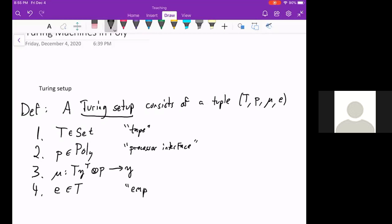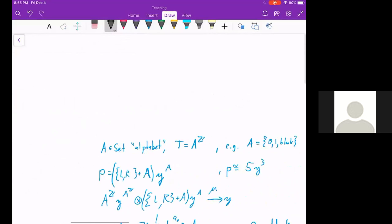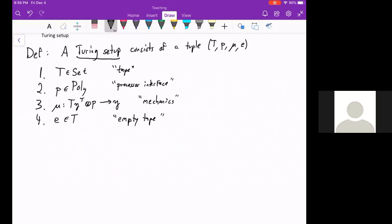This is like what the processor is allowed to notice and do in some sense. This is really the only interesting part of a Turing setup. What Turing did was define this whole one, two, three, and four. E in T is the empty tape. And this is the mechanics of Turing setup. So now I'm going to spend like four minutes trying to tell you what all these different things are in a special case, the tape, the processor interface, the mechanics, and the empty tape.